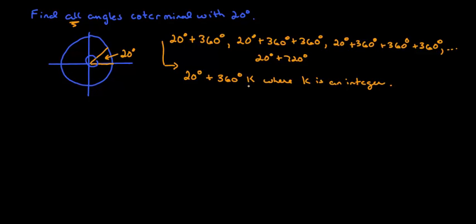So if we take k and we plug in like 6, we'd have 360 times 6 or 6 revolutions plus 20. So basically we go 20 and we go around 6 times until we end up back there and that would be an angle that's coterminal.